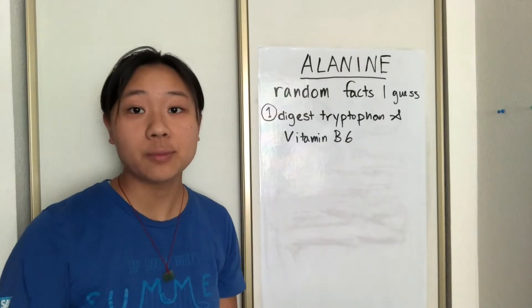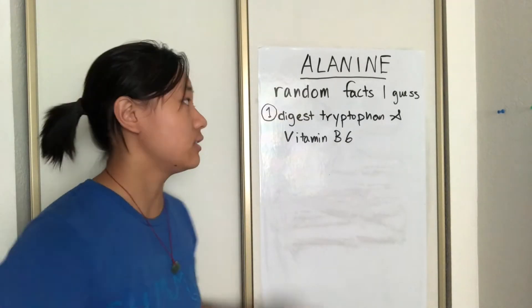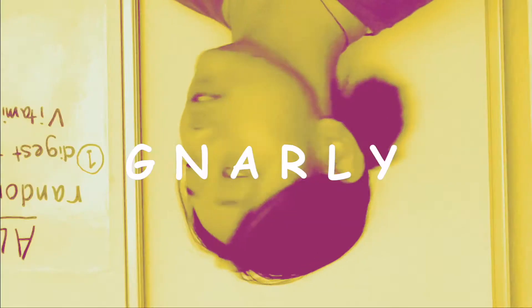Fun fact one, alanine actually helps the body digest, or metabolize, tryptophan and vitamin B6. That's right, one amino acid can digest another amino acid, normally.